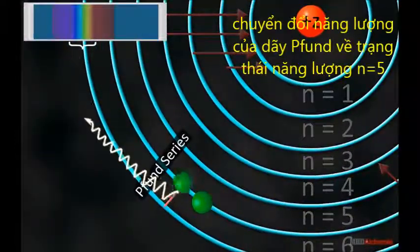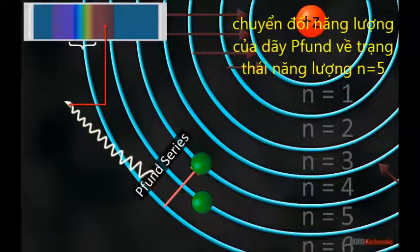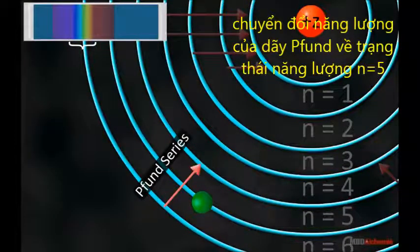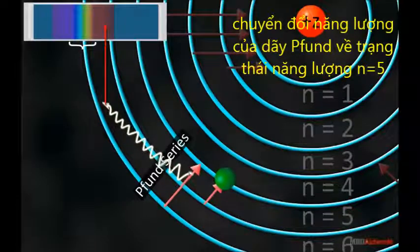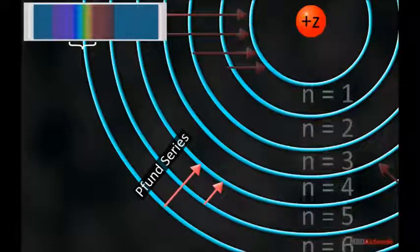When a transition from higher orbits to the fifth orbit occurs in the atom, Pfund series is obtained.